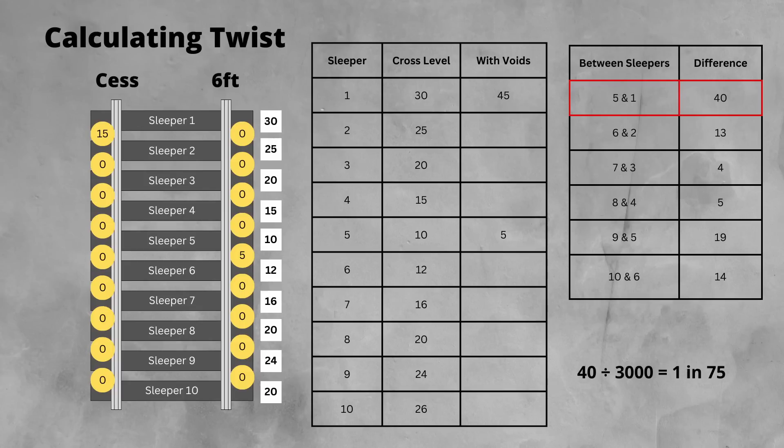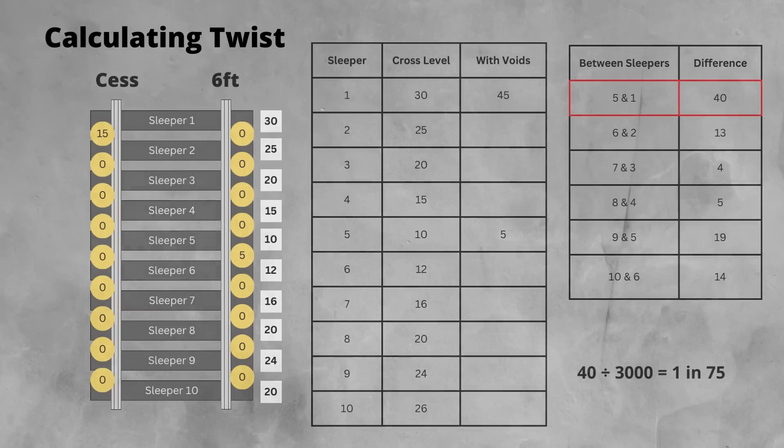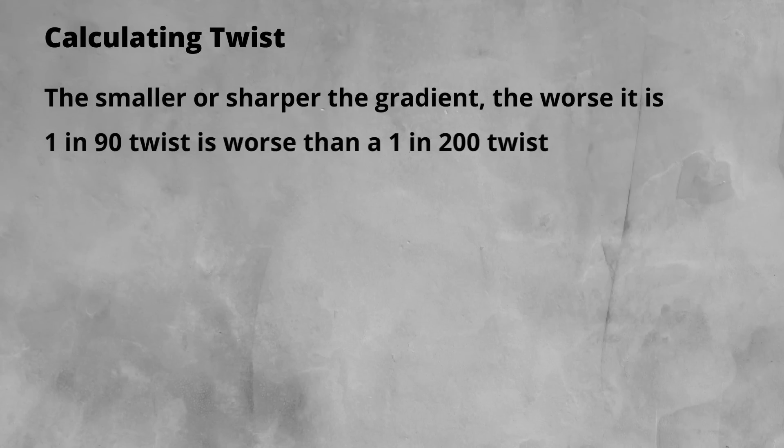So now you know how to calculate the gradient of a twist, but what does this mean? The smaller or sharper the gradient, the worse or more risky a twist is. So a 1 in 90 twist is worse than a 1 in 200.